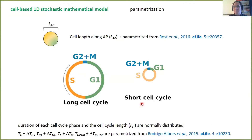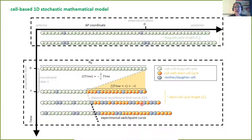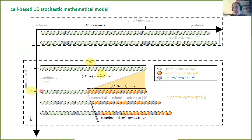We parameterized the model with the cell cycle dynamics acquired for the axolotl regeneration process and some geometrical characteristics of the cells. The only parameters we don't know are three: the remaining number of cells after amputation, the maximum recruitment distance lambda, and the maximum time tau of the signal. These three parameters we know nothing about a priori.